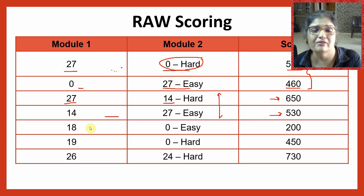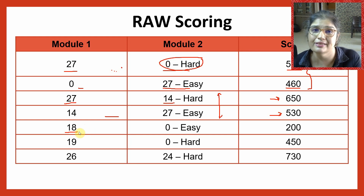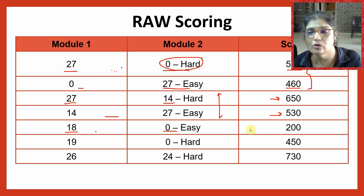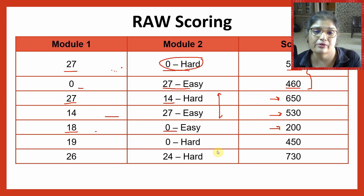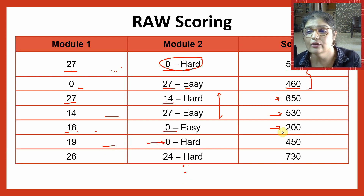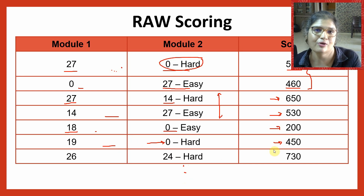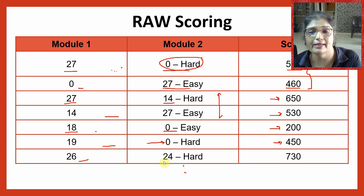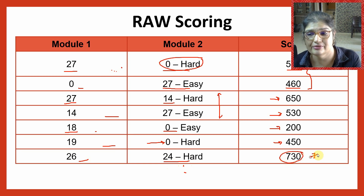Some digital SATs have a hard module two if you get 19 or more correct. So in that case, 18 can still give you an easy module two. With 18 correct in module one and zero correct in module two, you can still get only a 200 — imagine, with 18 questions correct, you're only getting a 200. Whereas if you get one extra question right and end up with the hard module, your 200 straightaway becomes a 450. So it's important that you get onto the hard module instead of the easy module. If you get one question wrong in module one and two questions wrong in module two, you lose 70 marks out of 800 — that's a lot.